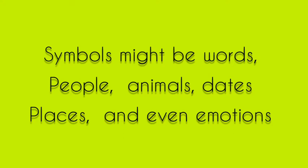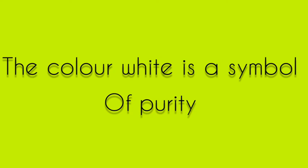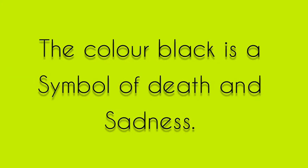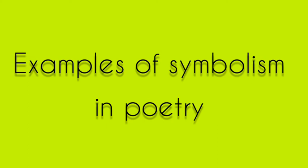Some common examples of symbolism include the following: Example one — the color white as a symbol of purity. Example two — the color black as a symbol of death or sadness. Example three — a gun is a symbol of violence. Let's now consider examples of symbolism in poetry.